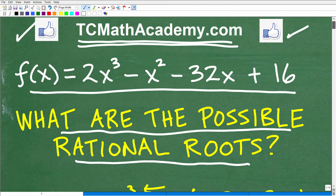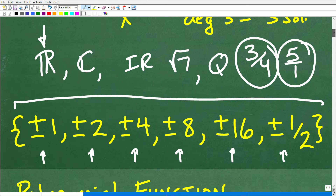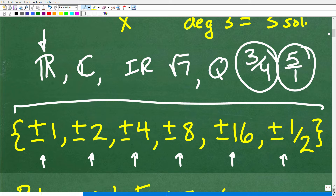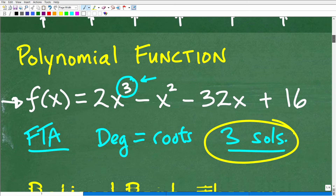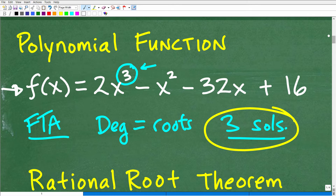The question says: what are the possible rational roots? There's no guarantee that this polynomial does have rational roots. But if it does have rational solutions, they will be amongst these numbers. We need to understand very clearly what this set of numbers means and represents, and put that in context of our larger understanding of polynomial functions. There are other things you can do to narrow this down, and there are other very important skills related to solving higher-degree polynomial equations.